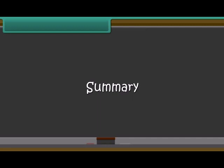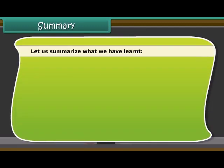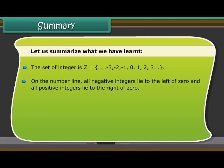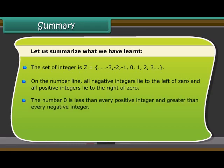Summary. Let us summarize what we have learned. The set of integer is Z which is equal to, within bracket, minus three, minus two, minus one, zero, one, two, three. On the number line, all negative integers lie to the left of zero and all positive integers lie to the right of zero. The number zero is less than every positive integer and greater than every negative integer.